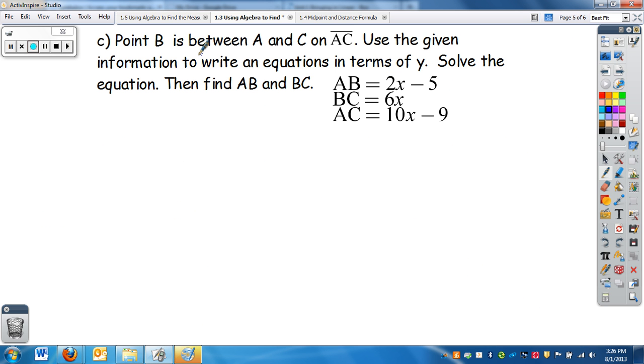All right, so on C, point B is between A and C. So we have three points, A, B, and C. And we know B is in between A and C, so B should be in the middle, A and C. And so I'm going to draw my segment, and it's on segment AC. Use the given information to write the equation in terms of x. Solve the equation and find AB and BC. So again, I always like with my diagrams to write everything on there, so it helps me think of what's going on. So it says AB is 2x minus 5, BC is 6x, and then the entire thing is 10x minus 9.